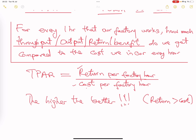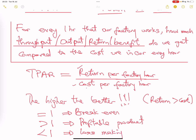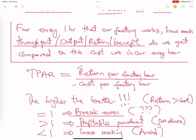If the throughput accounting ratio equals one, it is almost like a breakeven point — no profit, no loss. If it is greater than one, that is fantastic — a profitable product. If it is less than one, that is a loss-making venture and you should avoid that product. There might be a strategic reason to consider it, but if all else is equal, focus on profitable products.